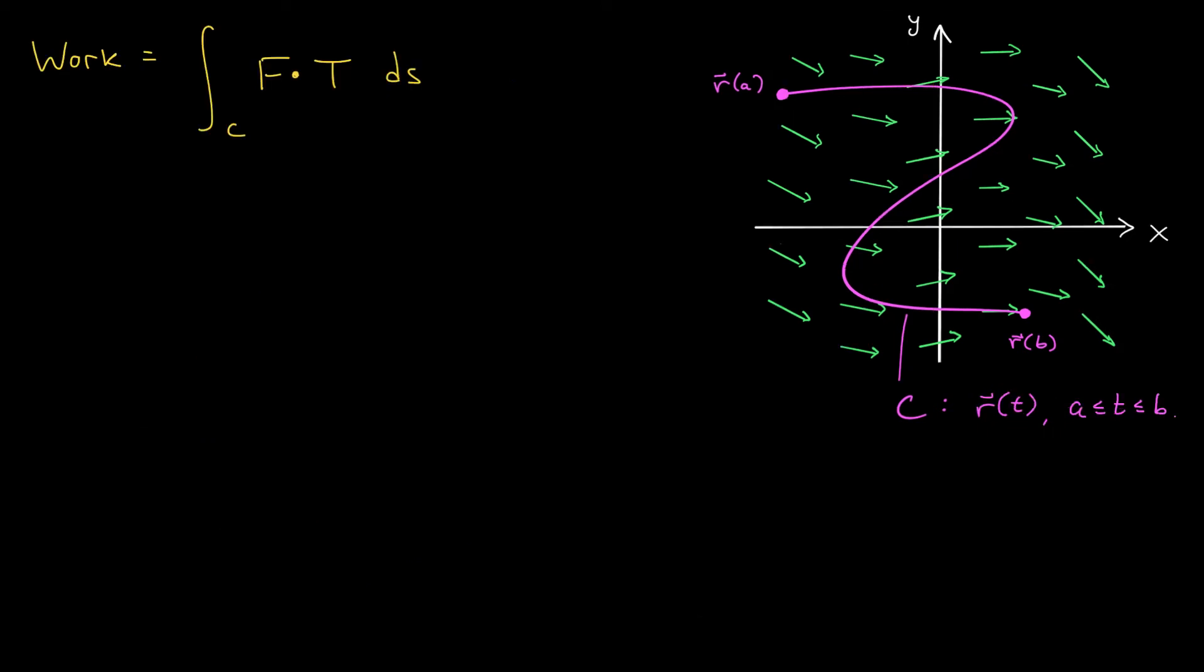Let's clean up this integral by removing this term T, shall we? We can rewrite the integral by introducing our parametric curve R(t). This gives us the integral from a to b of F(R(t)) dot T(R(t)), and then dS we know can be written as the norm of R'(t) dt.